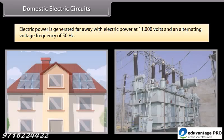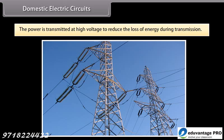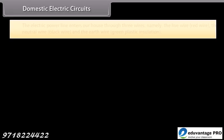Domestic electrical circuits. Electric power is generated far away from the places it is consumed. At the generating station, the electric power is generated at 11,000 volts with an alternating voltage frequency of 50 hertz. The power is transmitted to the places of consumption at high voltage to reduce the loss of energy during transmission.